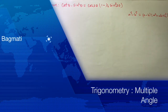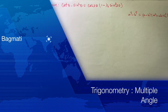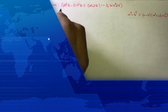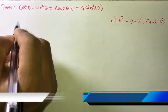Hello, Namaskar, welcome to our new video. Today we have another equation: cos⁶θ minus sin⁶θ equals cos 2θ multiplied by bracket 1 minus 1/4 sin² 2θ. This is our equation. Okay, let's start from LHS.